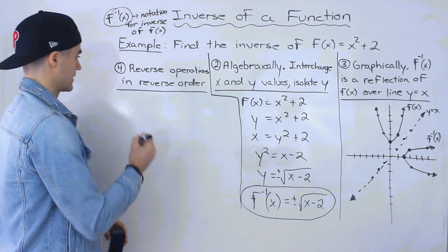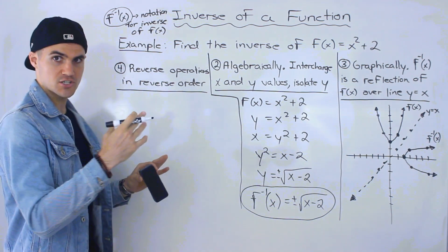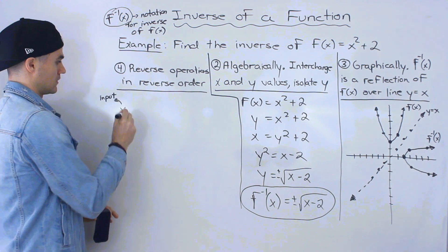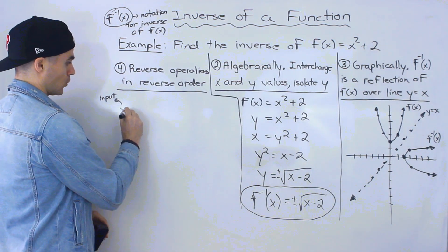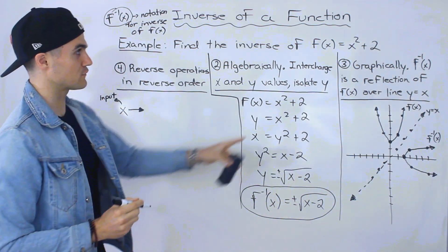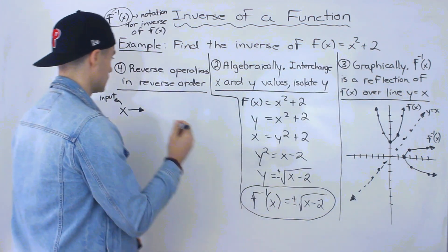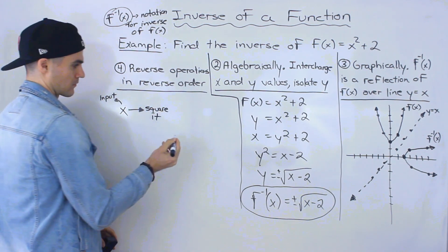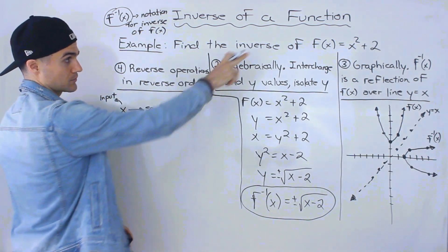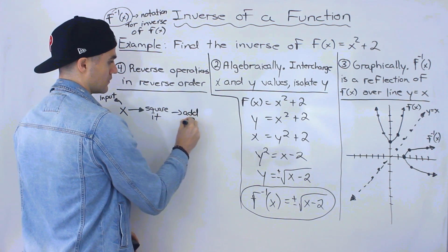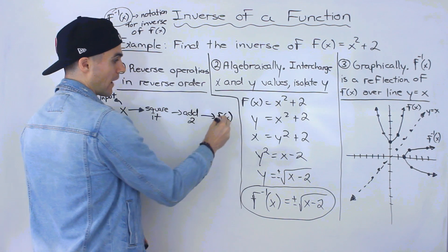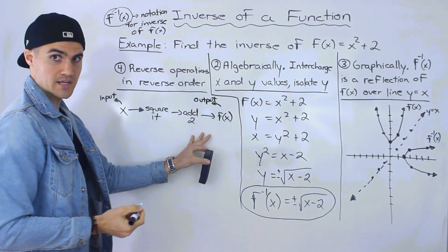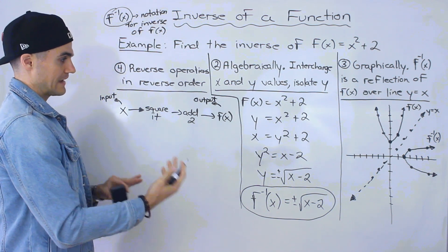A fourth way you may run into is reversing operations in reverse order. If we take our function f(x), we can describe in words what's happening. We're inputting some number for x — following order of operations, the first thing we're doing is squaring it. Then we add two, and from there we end up getting our y value, or our output.